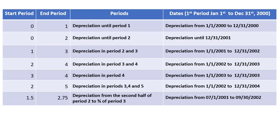For better understanding, look at the column with dates. Suppose the first period is the year 2000, from January 1st to December 31st. 0 to 1 is depreciation from 1/1/2000 to 12/31/2000. 3 to 4 is depreciation from 1/1/2003 to 12/31/2003. 1.5 to 2.75 is depreciation from 7/1/2001 to 9/30/2002.